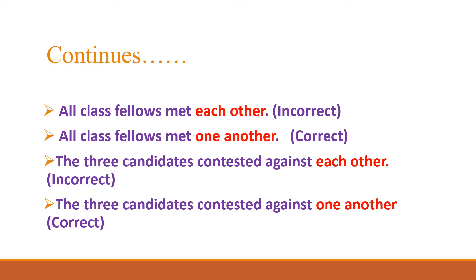For persons more than two, 'each other' is not used — 'one another' is used. The next example: 'the three candidates contested each other'. 'Each other' has been highlighted as incorrect because the subject is 'three candidates', which are definitely more than two. Hence 'each other' cannot be used. We need to replace 'each other' with 'one another'. So 'the three candidates contested against each other' is incorrect, whereas 'the three candidates contested against one another' is correct.